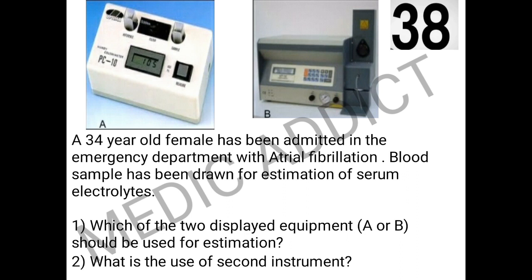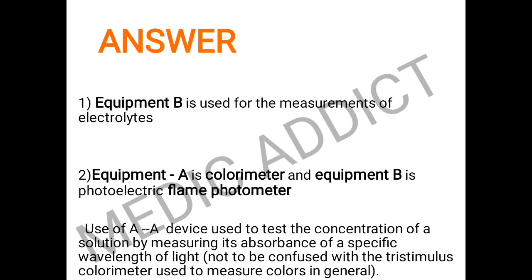The next spot is a clinical case. A 34-year-old female was admitted to the emergency department with atrial fibrillation, and a blood sample was drawn for estimation of serum electrolytes. Of the two given instruments A and B, equipment B — the flame photometer — is used to measure serum electrolyte levels. Equipment A is the colorimeter.